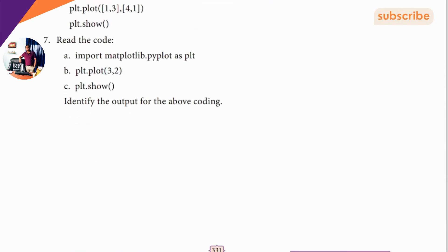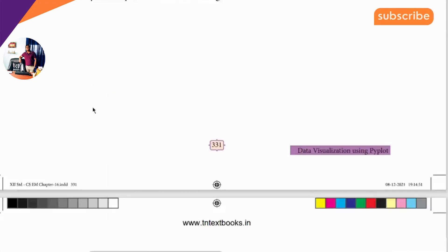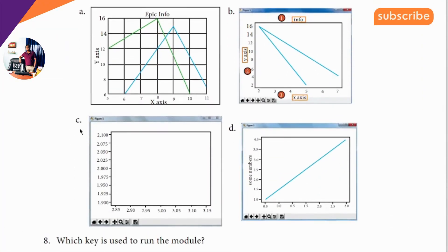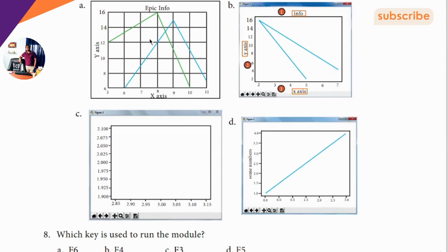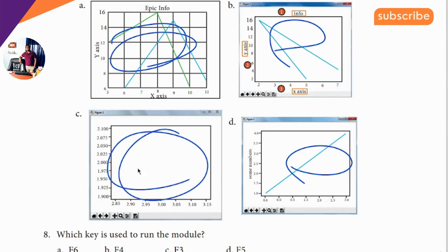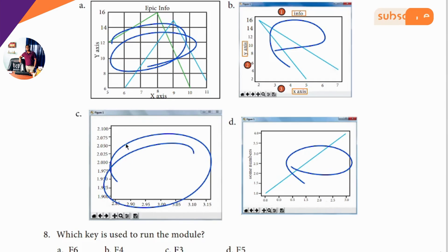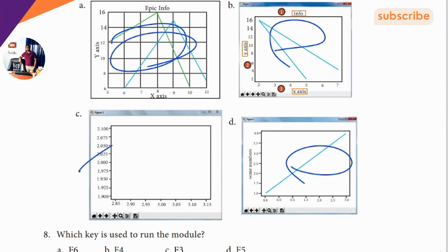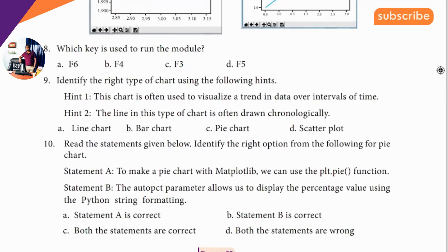Seventh question: read the code. In the point 2 — so 1, 2, 3 — this is the answer. Next, eighth question: the clue is 'one run, you can find 5 km,' so the answer is F5.